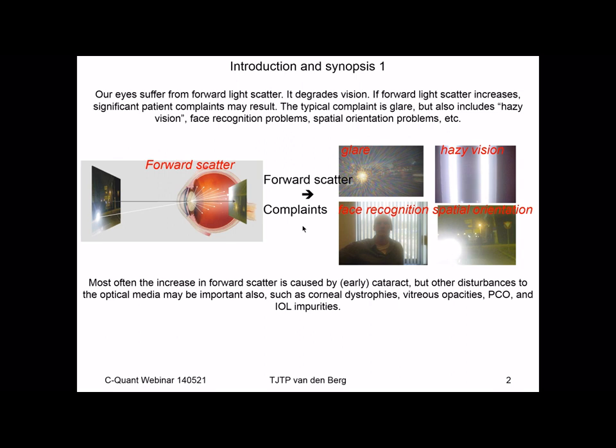By way of introduction and synopsis, I have a few slides. Our eye suffers from forward light scatter. That forward light scatter degrades vision. If forward light scatter increases, significant patient complaints may result. The typical complaint is glare, but also includes hazy vision, face recognition problems, spatial orientation problems, and many different problems. Different patients may voice those problems differently.